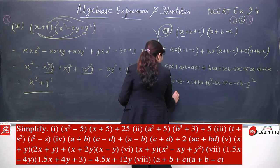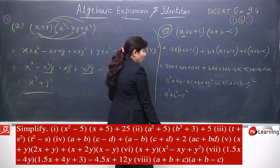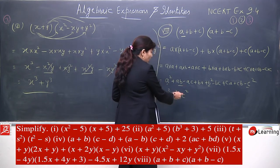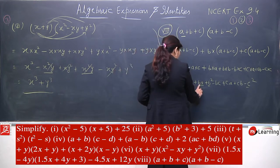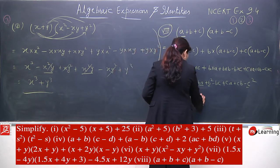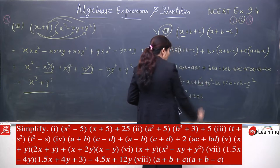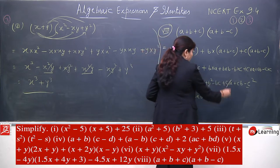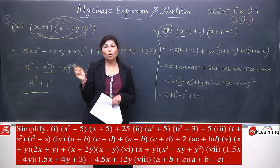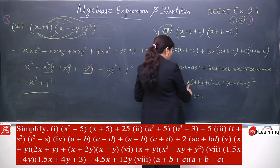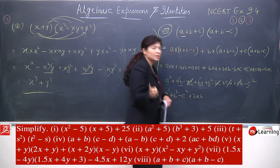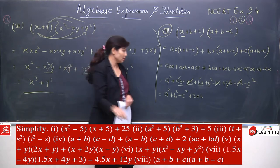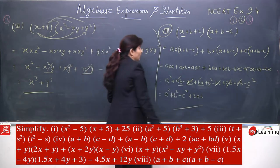a into a is a square, plus ab minus ac, plus ba plus b square minus bc, plus ca plus cb minus c square. That gives 9 terms. The unlike terms: a square plus b square minus c square. Now check: ab and ba are the same term — they give 2ab. ac and ca — same term, opposite sign — they cancel. bc and cb — same term, opposite sign — they also cancel. So the final answer is a square plus b square minus c square plus 2ab.